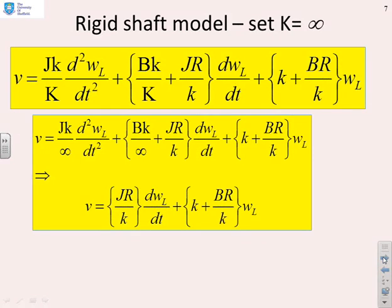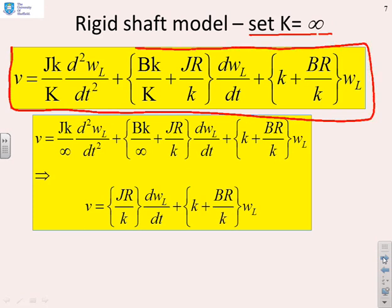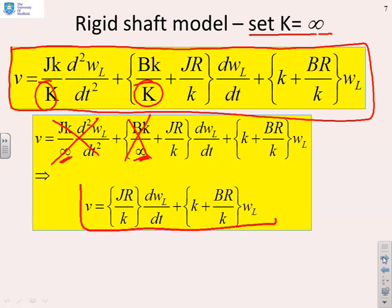First then, what happens if I set the spring constant equal to infinity? Here's the model we've derived, assuming that the shaft was flexible. And now all I'm going to do is wherever I had this capital K, which was the spring constant, I'm going to put in infinity. And of course, what that does is it kills this term and it kills this term. And what do you get left with? You get left with a first order model.